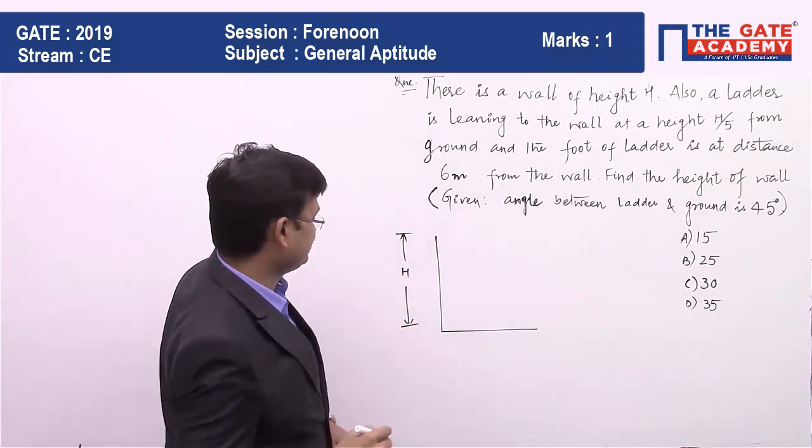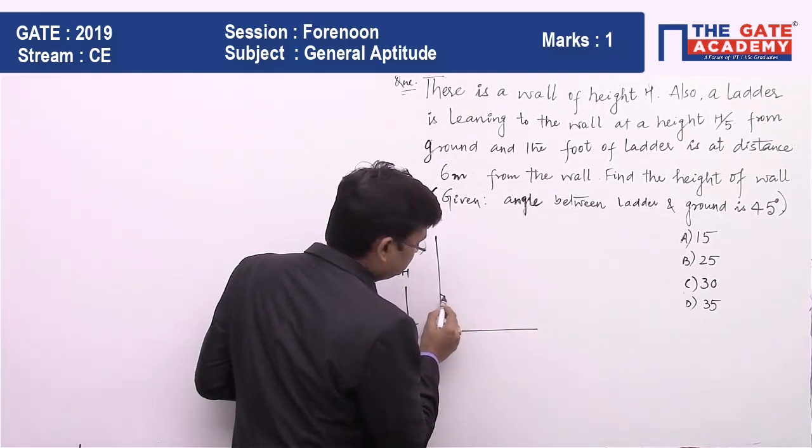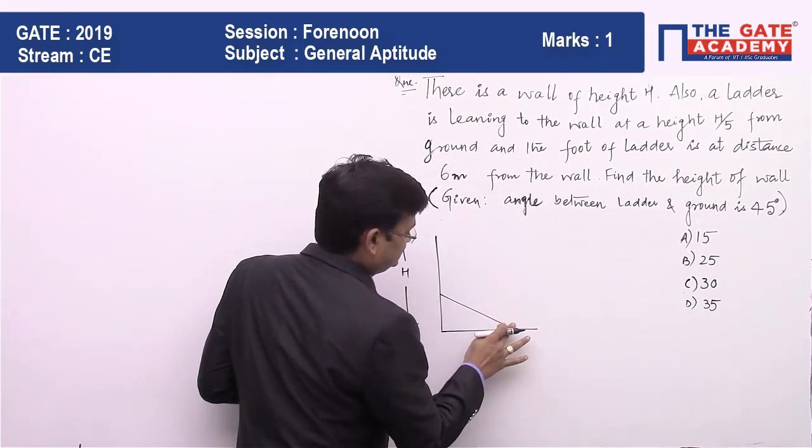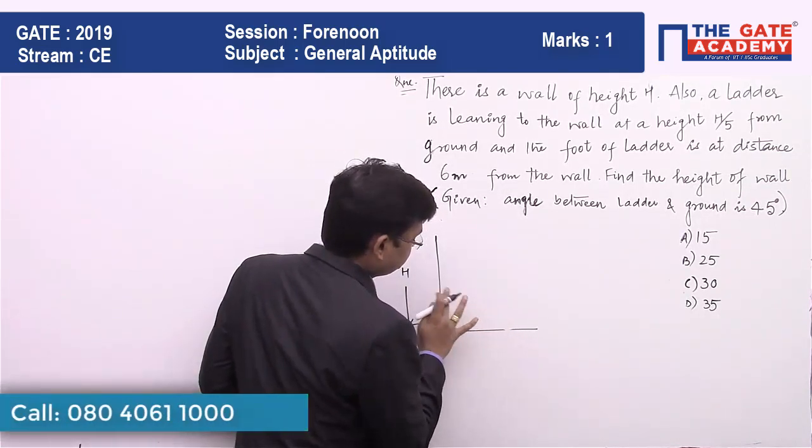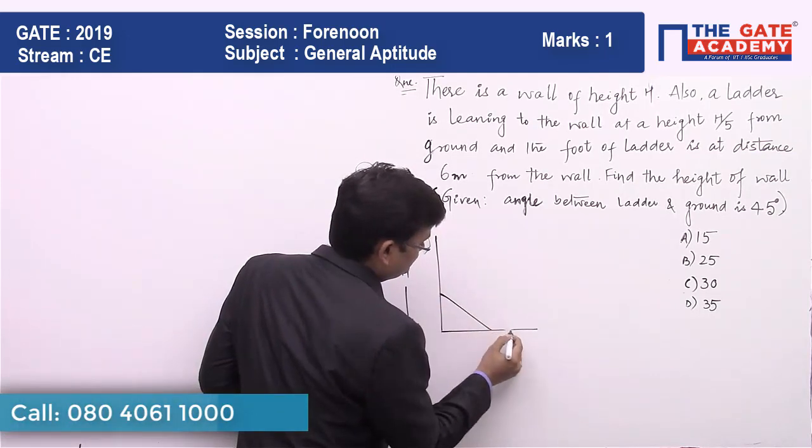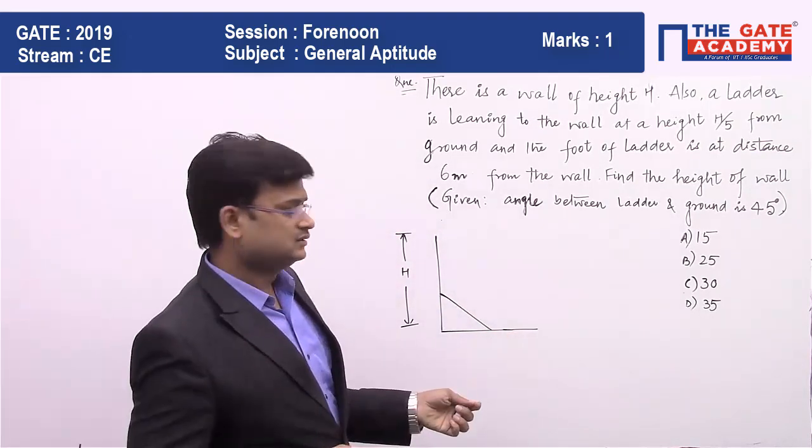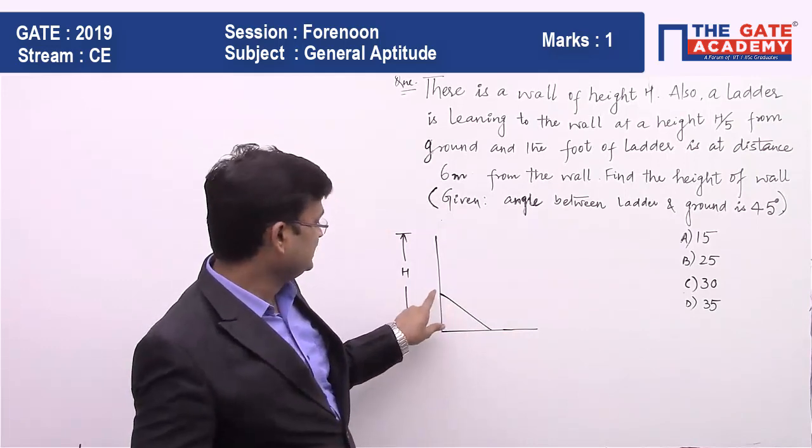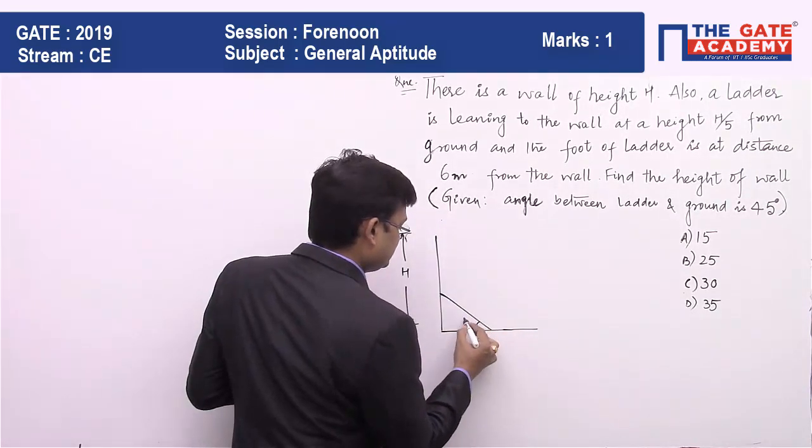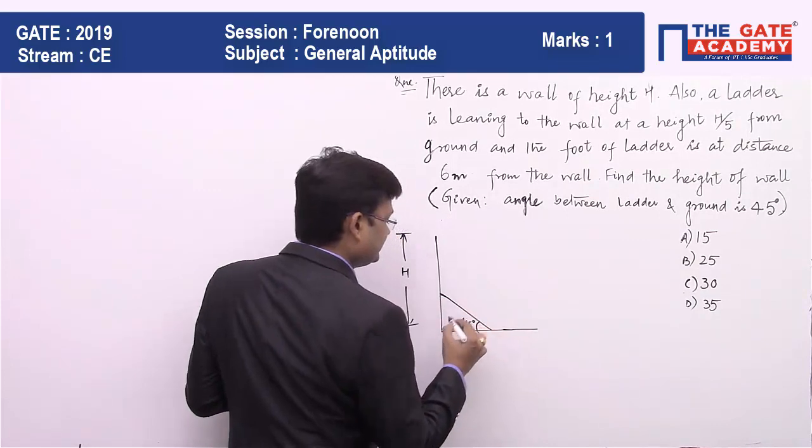Height of this wall is given as h, and then there is a ladder which is leaning against this wall and it is making 45 degrees here.